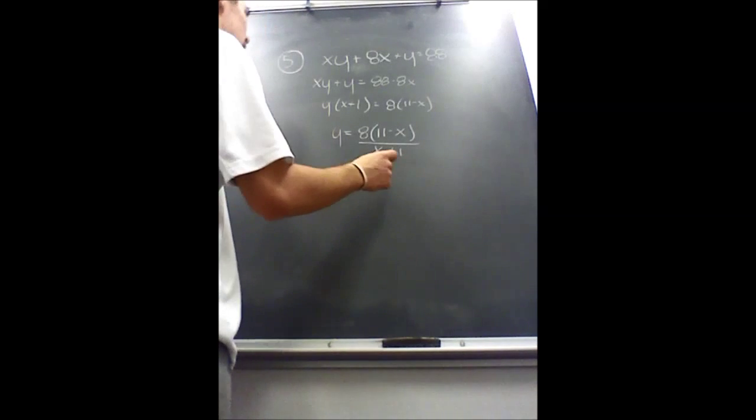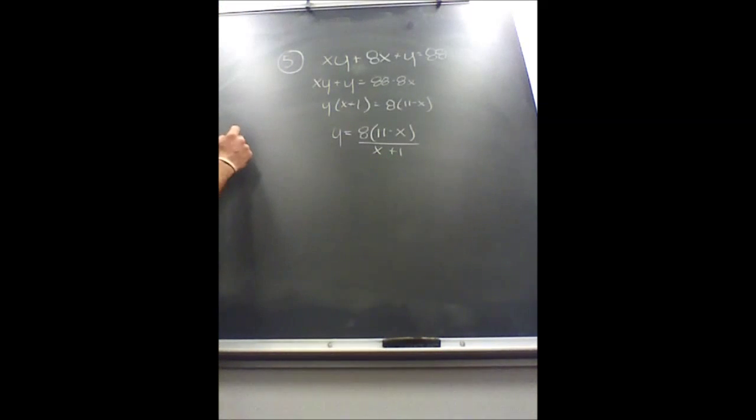Now, once you have that, you're able to graph it. Since we're looking for positive integers, we only need to deal with the first quadrant.